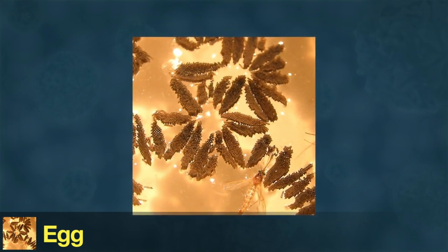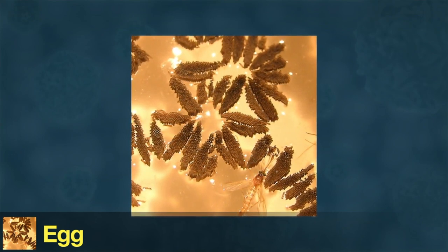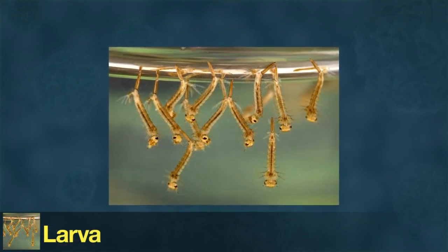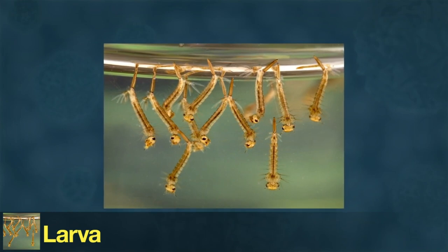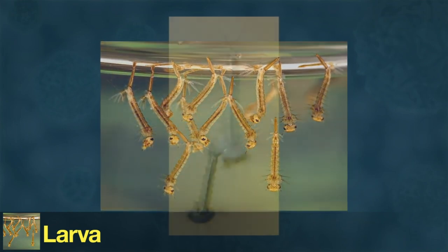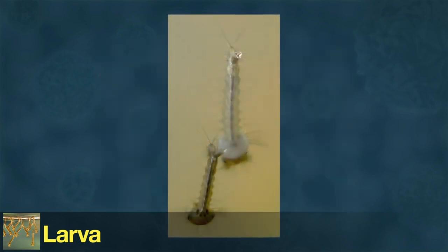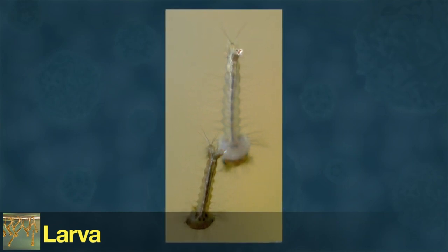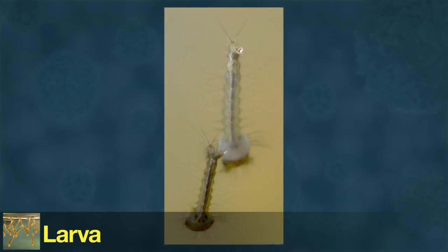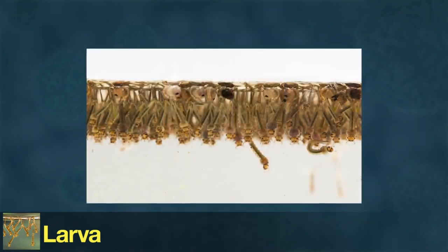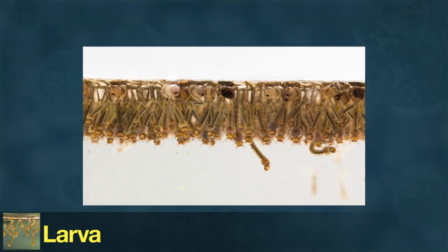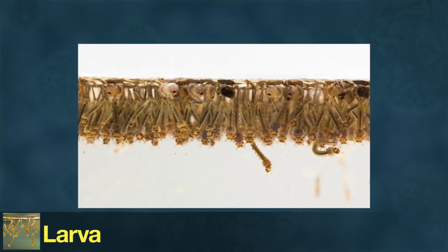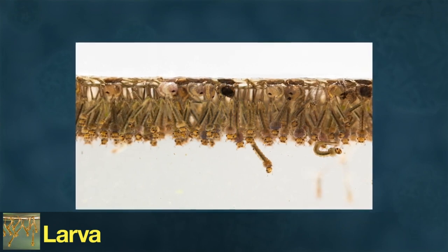Once a mosquito hatches from its egg, it enters the second stage of its life cycle—the larva. The larva lives underwater and eats algae, plankton, and other microorganisms. Larvae need air to breathe, and the larvae of many mosquito species have a breathing tube by their tail called a siphon. These larvae hang upside down and stick their siphons above the water to get air. A mosquito stays as a larva for four to fourteen days, depending on temperature and species.